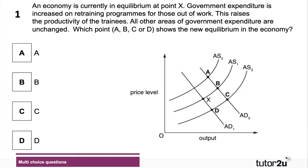Question one: spending on retraining. Retraining is a way of reskilling the labour force, particularly those out of work, addressing structural unemployment. You'd expect the aggregate supply curve to shift outwards because of higher productivity. But government spending has also gone up, and aggregate demand is C plus I plus G plus X minus M, so there's an outward shift in both aggregate demand and supply.